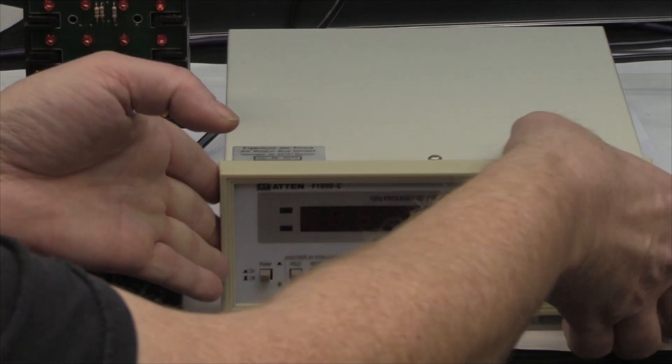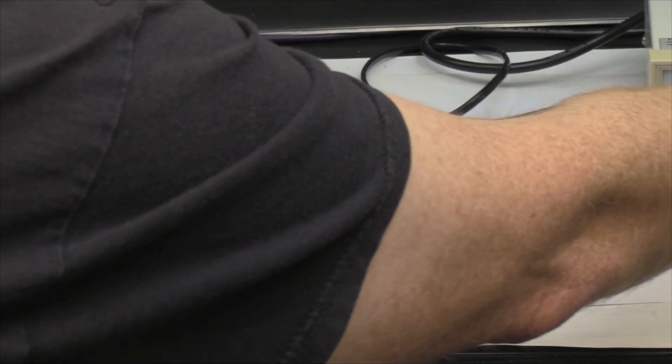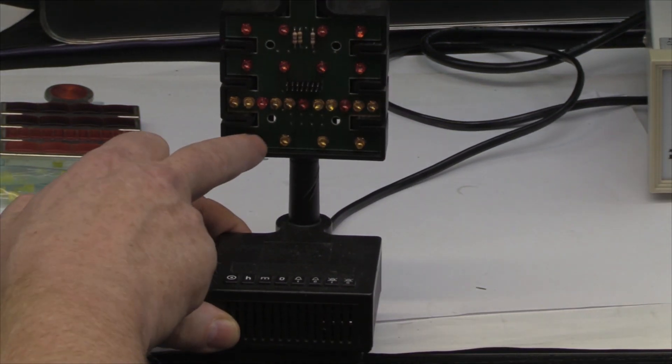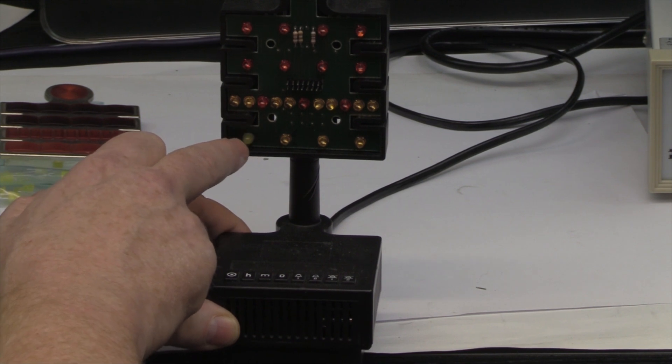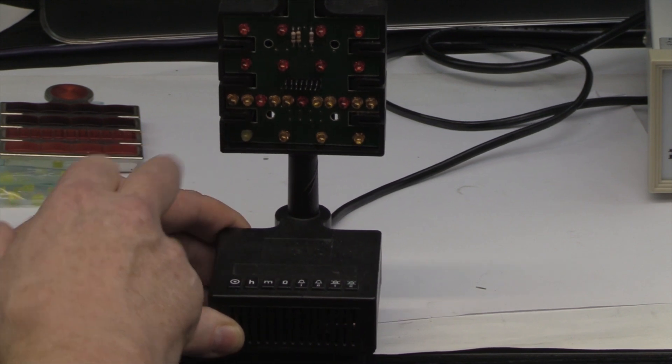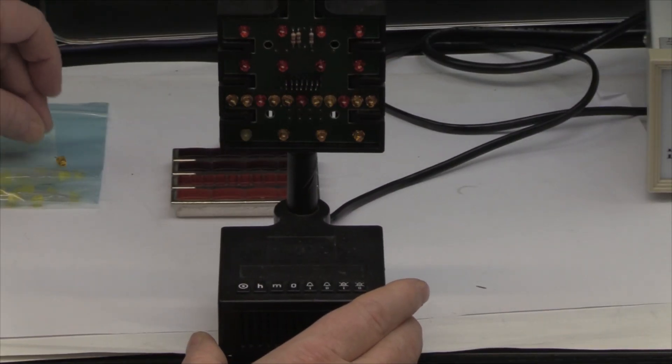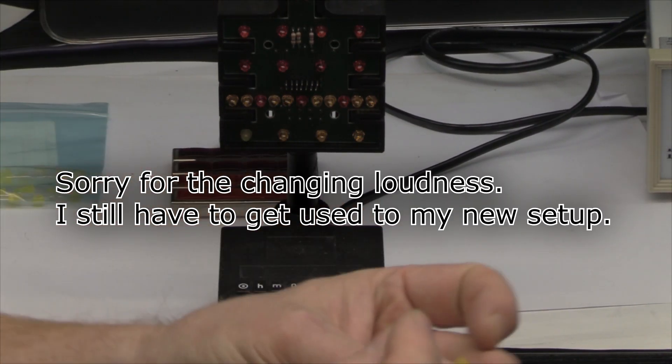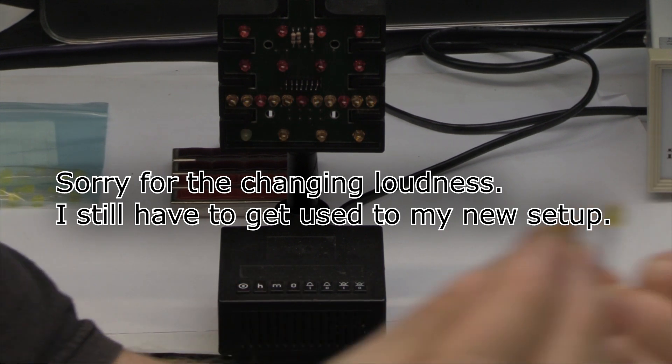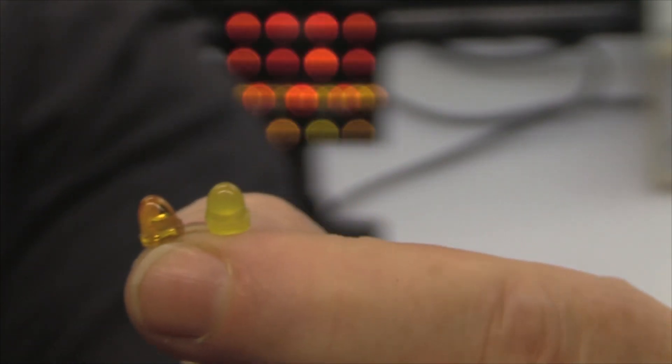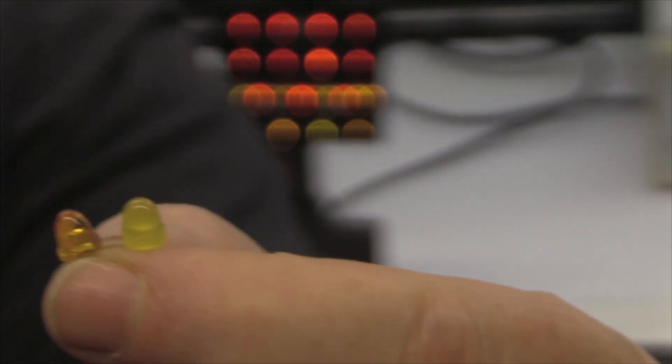In another video I showed you this Berlin clock which had one LED much dimmer than the others. Let's turn this on. These are side by side the original and the replacement LED.